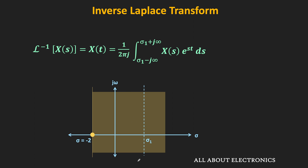For example, if the function is e^(−2t)·u(t), we know the ROC for that function. The line over which this integration is performed is within the ROC. In general, if the boundary point is σ₀, during the inverse Laplace transform, the integration line is within the ROC, and using this expression we can find the inverse Laplace transform of the function.